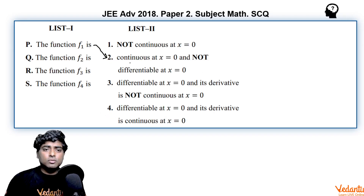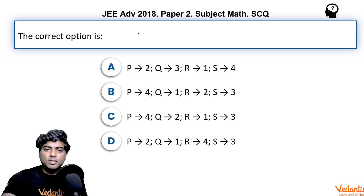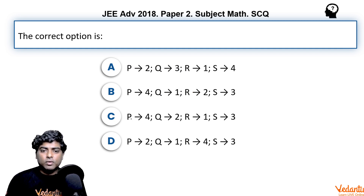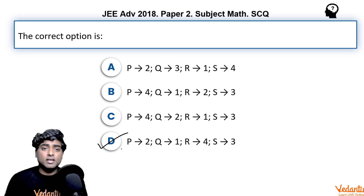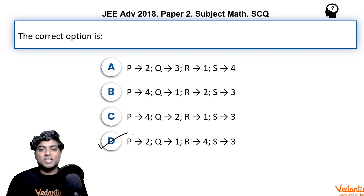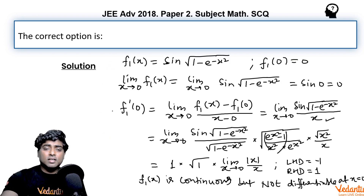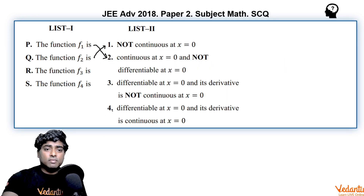So p goes with 2 and q goes with 1. The combination p→2, q→1 corresponds to option D, so option D must be the correct answer. In the exam there is no need to check r and s, but we will discuss f3 and f4 as well.